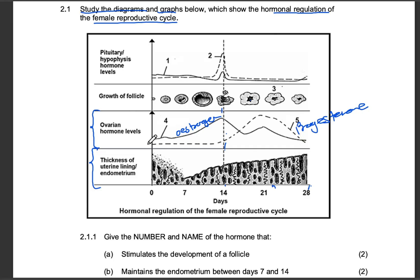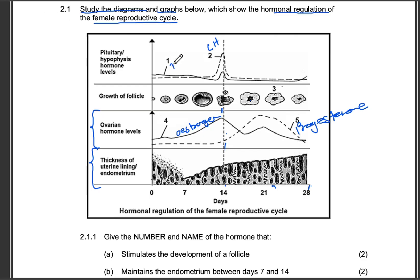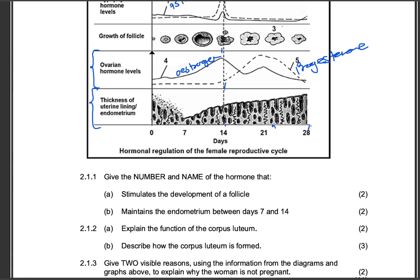The next section shows the growth of the follicle — from primary to secondary up to the Graafian follicle, then ovulation takes place, followed by the corpus luteum. For the pituitary hormones, we have LH and FSH. The hormone that peaks around day 14 is LH, so that is hormone number two. The one that increases at the beginning of the menstrual cycle is FSH — follicle stimulating hormone.